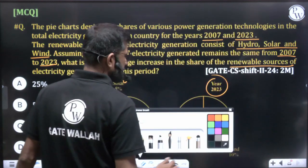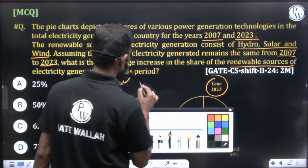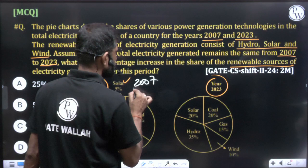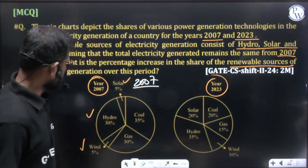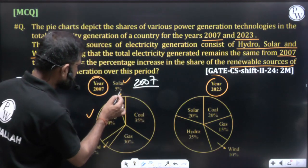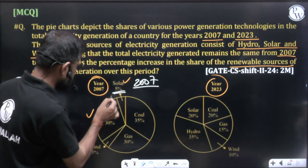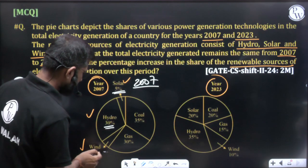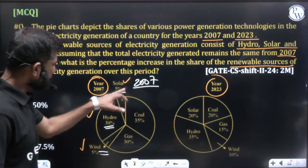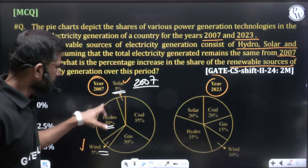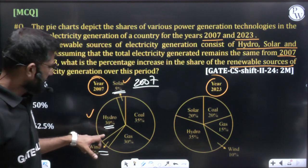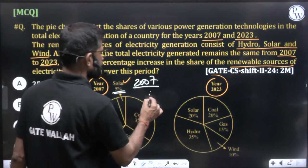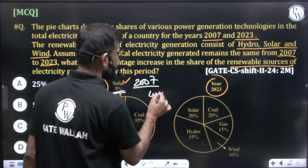For 2007, the total renewable resources percentage is 5% plus 30% plus 5%. We are talking only about renewable resources: 30 plus 5 plus 5 equals 40%. So in 2007, renewable electricity generation was 40%.